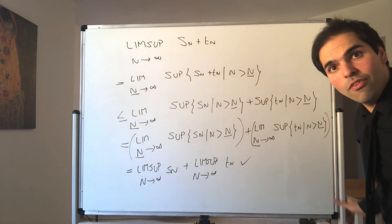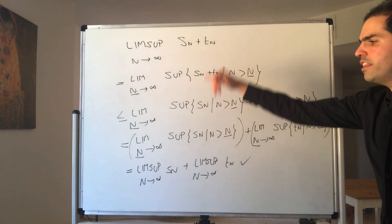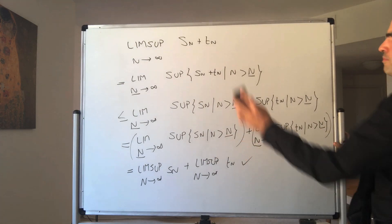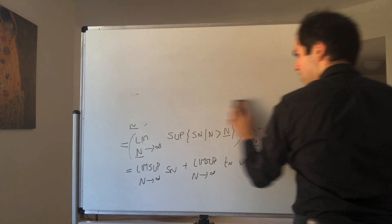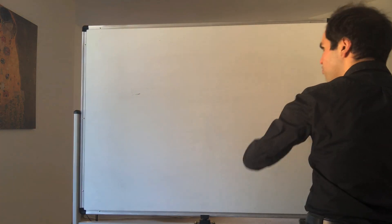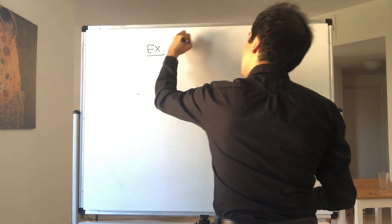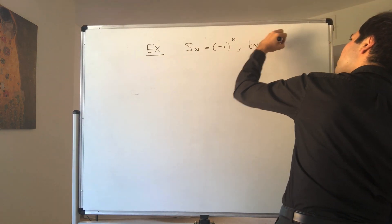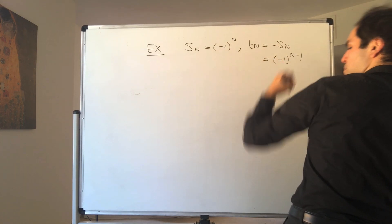And therefore we're done. But let me also give you a counterexample to show that we don't always get equality. Consider the following: let Sn equal minus 1 to the N, and Tn equal minus Sn, which becomes minus 1 to the N plus 1.